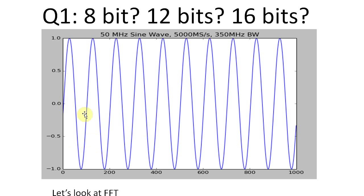For example, here we have a sine wave, and the figure tells you that it's being digitized at 500 mega samples, or 5,000 mega samples, so 5 gigasamples per second, and I have a 350 megahertz analog bandwidth. We can look at the FFT of that. This probably looks fine.